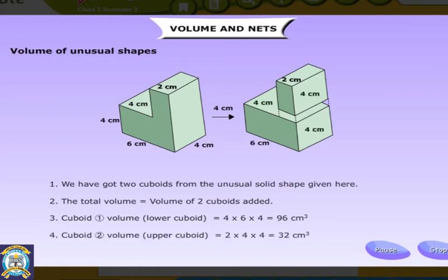Cuboid 2 volume, upper cuboid, is equal to 2 into 4 into 4, that's equal to 32 cm cube.